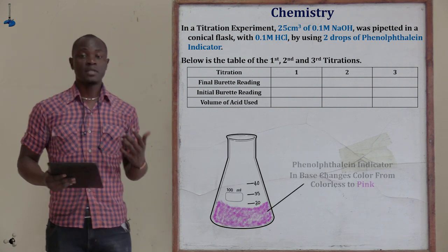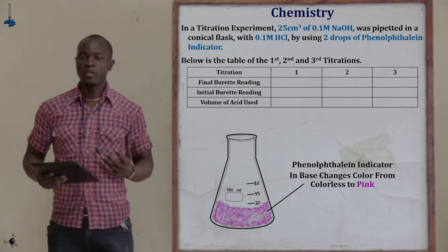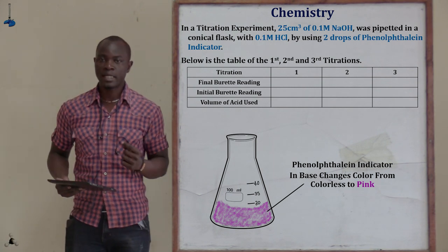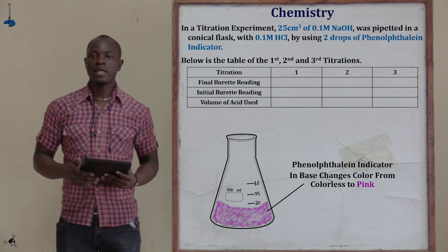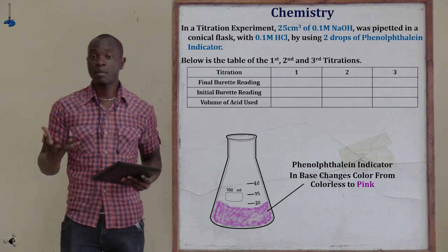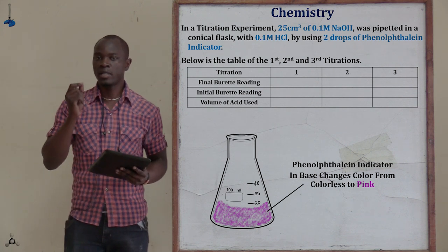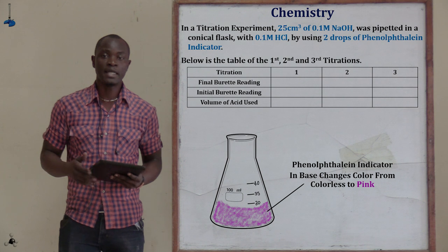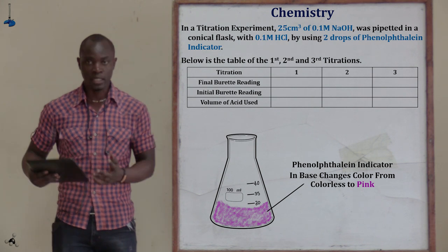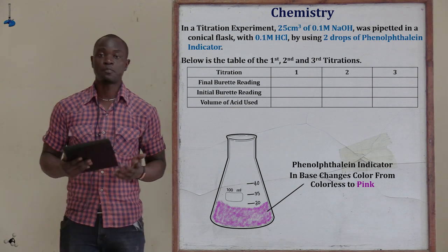Remember, for the phenolphthalein indicator: in the presence of an acid, it is colorless. In the presence of a neutral solution, it is also colorless. But in the presence of a basic solution, the phenolphthalein indicator changes color to pink. So during this experiment, as soon as we put sodium hydroxide inside the conical flask and added two drops of phenolphthalein indicator, the solution changed from colorless to pink, confirming that phenolphthalein is pink in a basic solution.